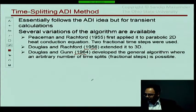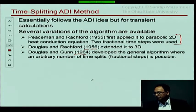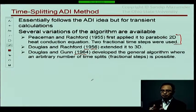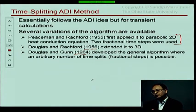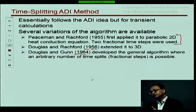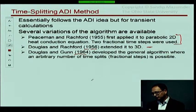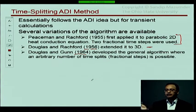In the very first method, if you read the paper, you will see that they split a time-step into two parts. In one part they do a row-wise sweep, and in the other part they do a column-wise sweep. In the 3D extension, the time-step is split into three parts, doing constant-I, constant-J, and constant-K sweeps.